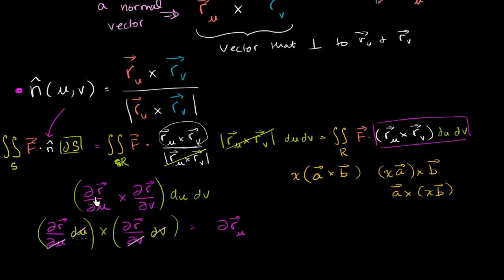All you're left with is the differential of r. Since we lose the information that it's in the u direction, we write it as the differential of r in the u direction — this is not the partial derivative of r with respect to u, but rather just how much r changes given a small change in u. This is the differential in the direction that u changes. And we cross that with the differential of r in the v direction. Let's conceptualize this — it goes back to our original vision of what a surface integral is all about.